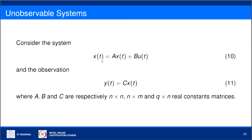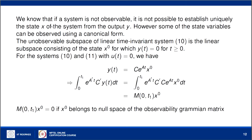Now we consider a system which is not observable. If a system is not observable, then how much of the state can we actually observe? Not all states may be observable, but some states may be observable depending on the matrices A, B, C. If the system is not observable, it is not possible to uniquely establish the initial state or the entire state of the system.